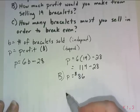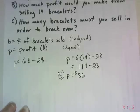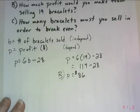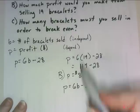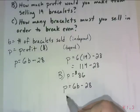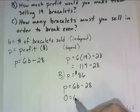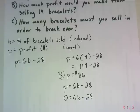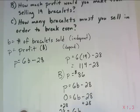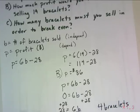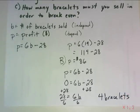For part c, how many bracelets must you sell in order to break even? Breaking even means no profit but no loss either — profit equals zero dollars. So I set p equal to 0: 0 equals 6b minus 28. I add 28 to both sides to get 6b equals 28, then divide by 6. That tells me that b equals 4 bracelets — I need to sell 4 bracelets in order to break even.